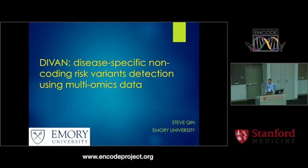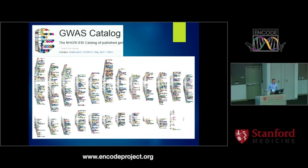Thank you for giving me this opportunity. Today I'm going to tell you briefly about our recent work on disease-specific non-coding risk variant detection. In the past decade, thousands of GWAS studies have been conducted, and tens of thousands of variants have been identified at the genome-wide significant level for hundreds of different diseases and phenotypes.